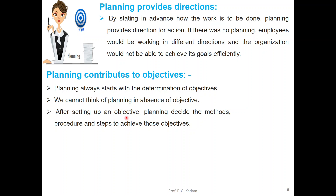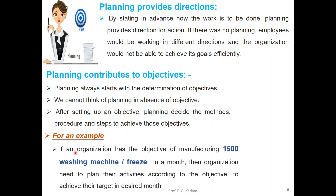After setting up an objective, planning decides the methods, procedures, and steps to achieve those objectives. For example, if an organization has the objective of manufacturing 1,500 washing machines or fridges in a month, then the organization needs to plan its activities according to that objective to achieve their target in the desired month.